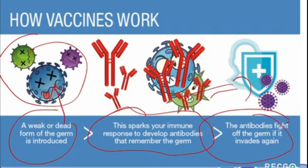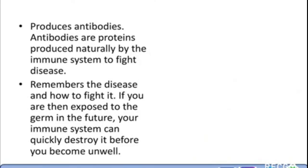Whenever a new COVID virus enters the body of a vaccinated person, since your body's cells already remember the way to destroy the new antigen in terms of COVID infection, it develops antibodies and kills it. Antibodies are proteins produced naturally by the immune system to fight the disease. It remembers the disease and how to fight it, and if you are then exposed to the germ in the future, your immune system can quickly destroy it before you become unwell.